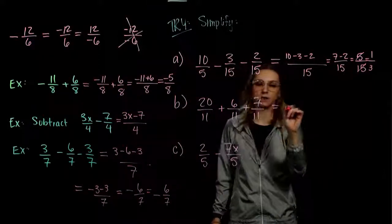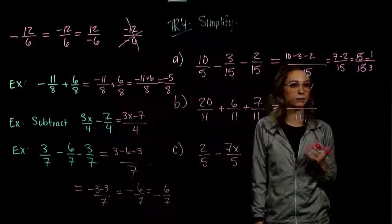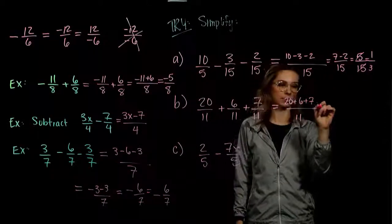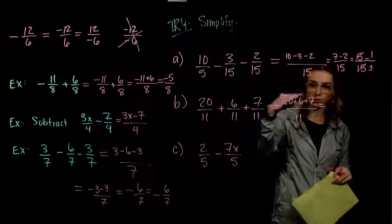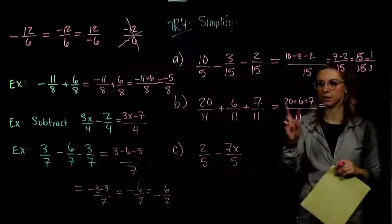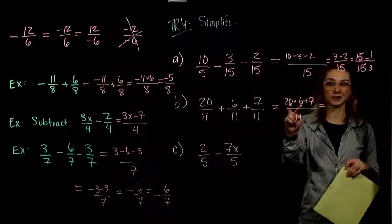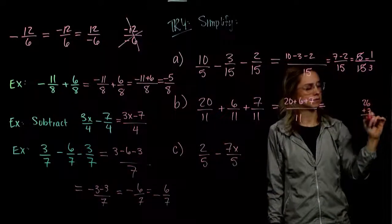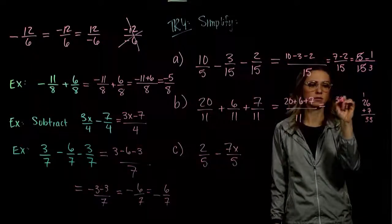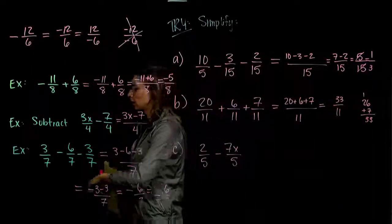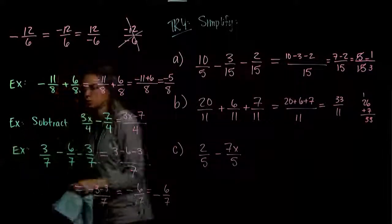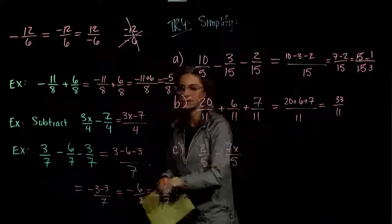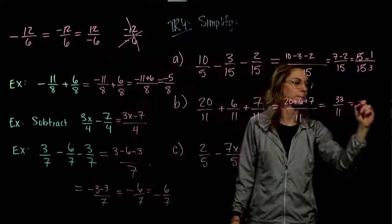In part B, we've got the common denominator already, so we're just adding across the top: 20, 6, and 7. All same sign, looking for the sum. 20 and 6 gives us 26, plus 7 gives us 33 over our common denominator of 11. How many times does 11 go into 33? Three times — simplified to 3.